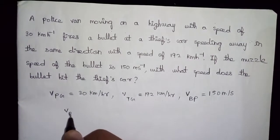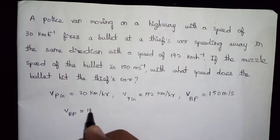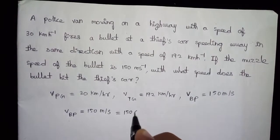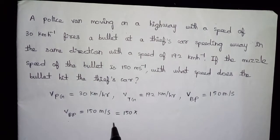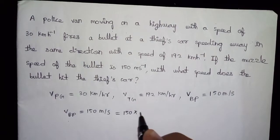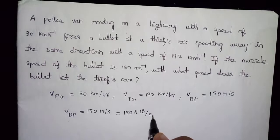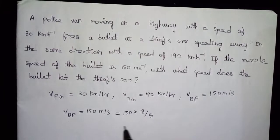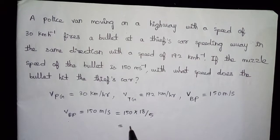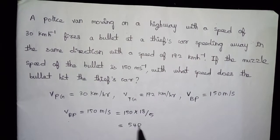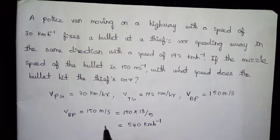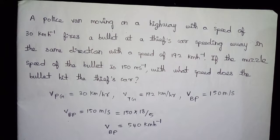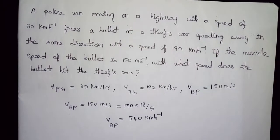V of BP is equal to 150 meters per second. To convert meters per second to km per hour, we multiply by 18 over 5. To convert km per hour to meters per second, we multiply by 5 over 18. So 150 meters per second equals 540 km per hour. The velocity of the bullet with respect to the police is 540 km per hour.